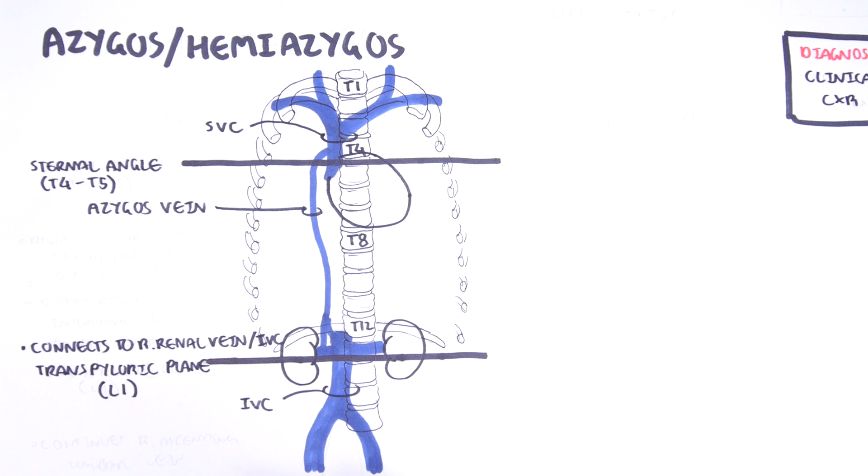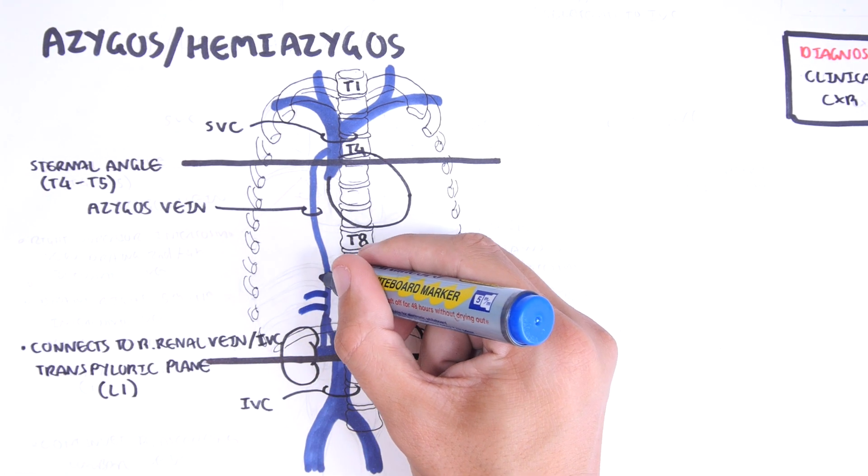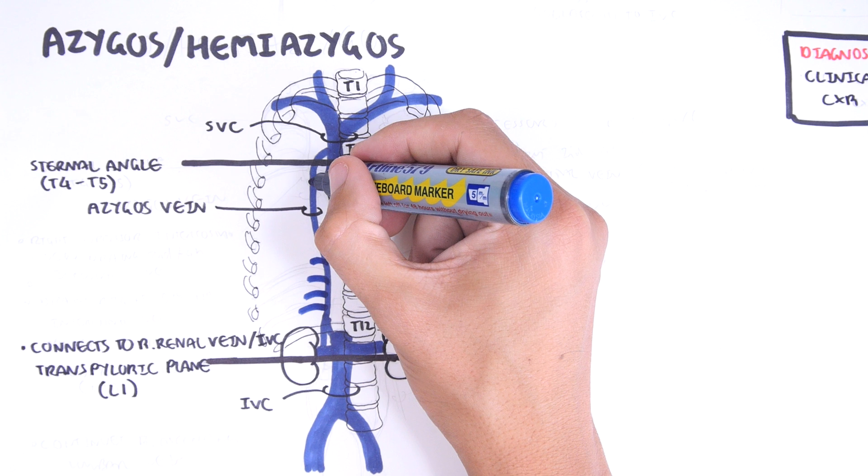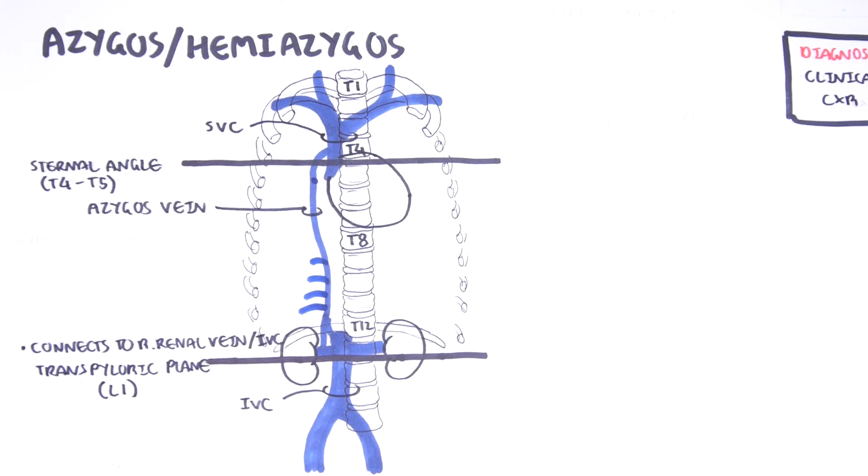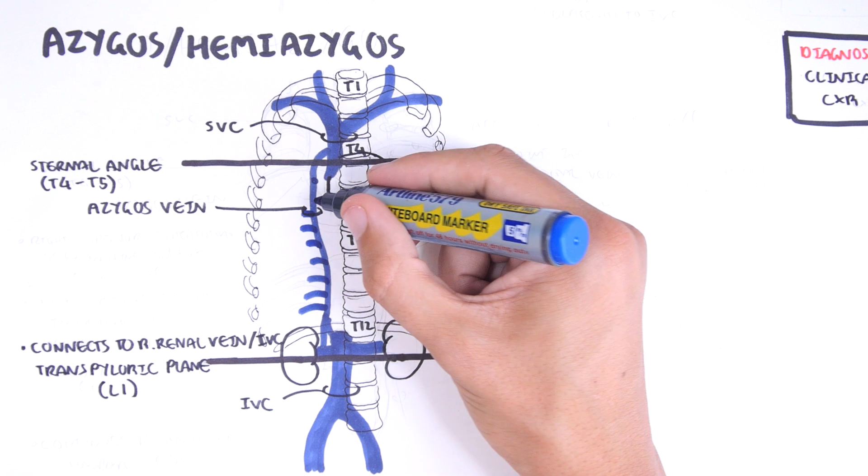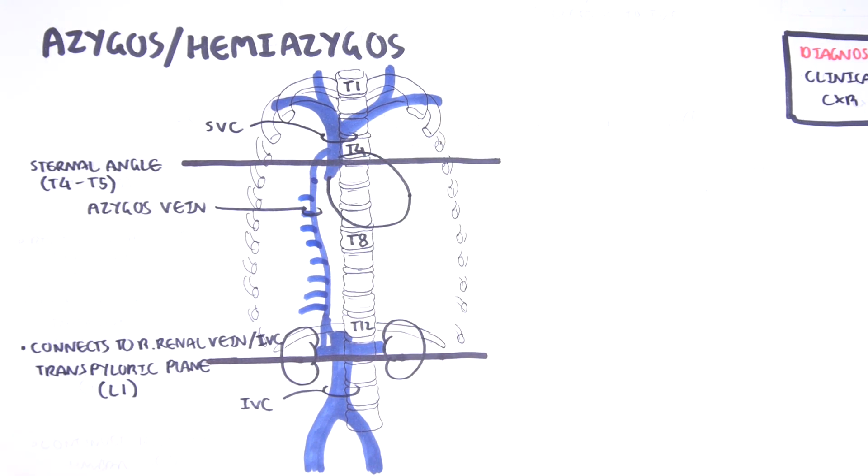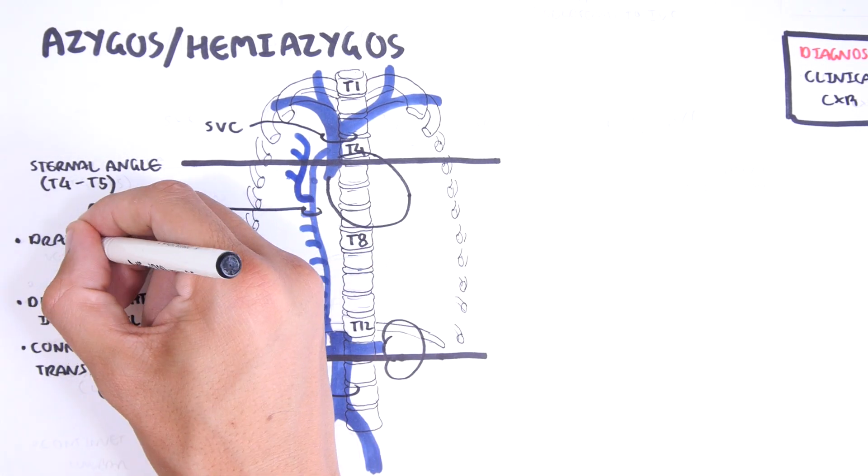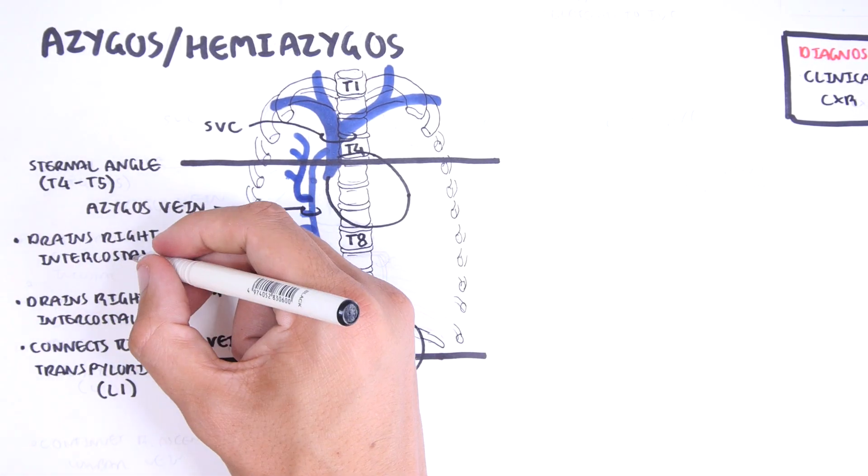The azygos vein ascends on the right side up to the level of T4, then passes anterior to form an arc joining the superior vena cava. This is the azygos arc. The azygos vein drains the right 2nd to 11th intercostal veins.